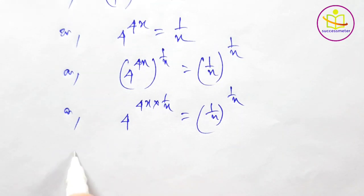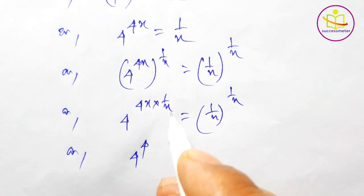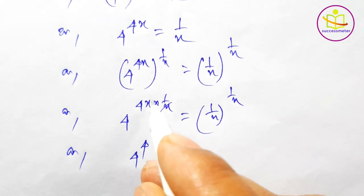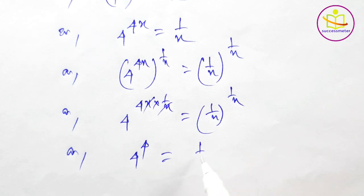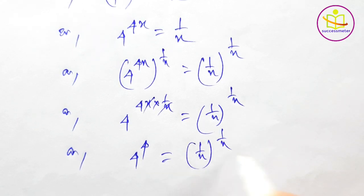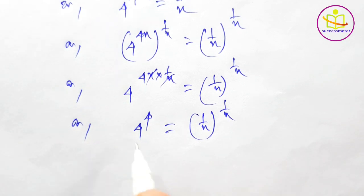4 to the power 4 — the x's cancel — is equal to 1 by x to the power 1 by x. From here we can write: